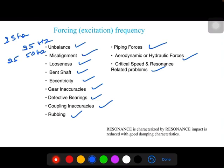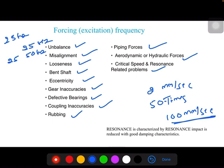If your machine vibrates at 2 mm per second and there is coincidence with the forcing frequency, it increases around 50 times and will be around 100 mm per second. So much high vibration. The only thing you can do to reduce the resonance impact is by means of good damping characteristics.